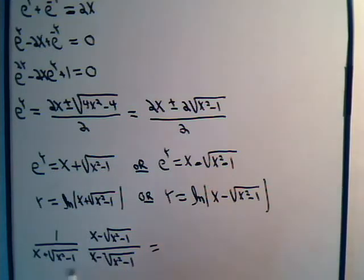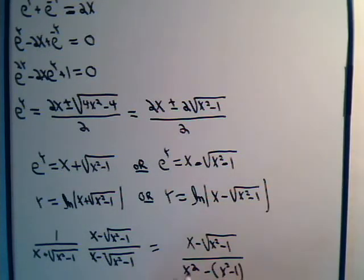This will equal, the numerator stays the same. When we multiply the denominator, we're going to have x squared. The inner terms cancel out, and we're going to have minus x squared minus 1. X squared minus x squared, and minus 1 times minus 1 is plus 1. So this time we see that the reciprocal of this equals this.